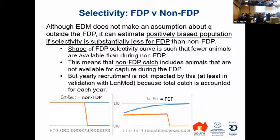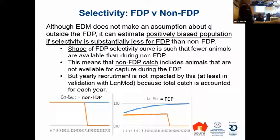There's an incompatibility between the Leslie-Davis catchability estimation and total catch during the rest of the year. This problem wouldn't happen if selectivity were equal or greater during the rest of the year — it only occurs when selectivity is lower during the FTP period.